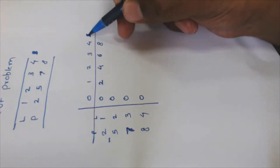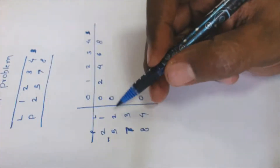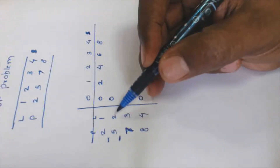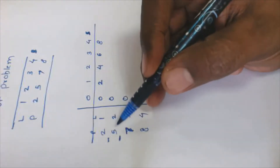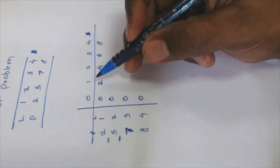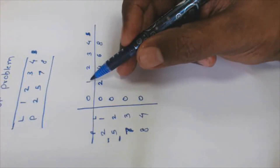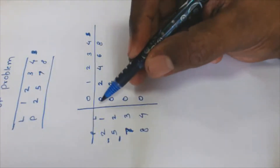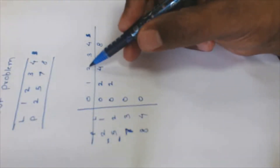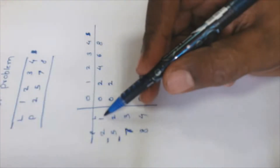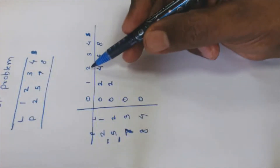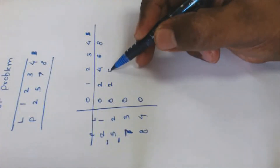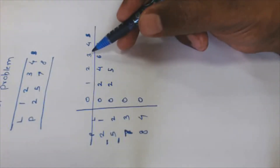Now with a rod of length two, we have two possibilities: we can sell rods of length one or length two. Selling a rod of length two gives a price of five. Comparing: cutting into two parts of length one gives four, but selling as a whole length-two rod gives five. Five is a better option, so we go with five.